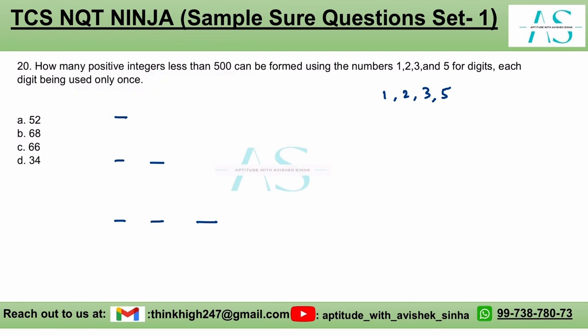Now, how many one-digit numbers are possible? So we have 1, 2, 3, 5. So four ways or four numbers are possible.